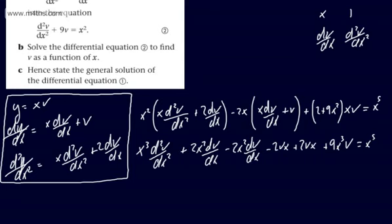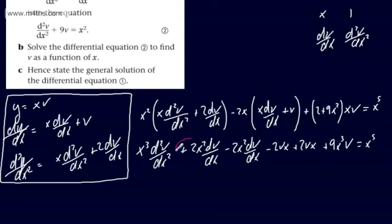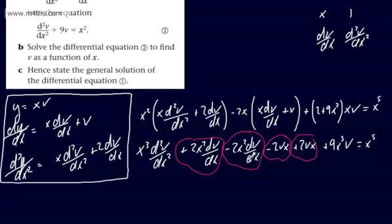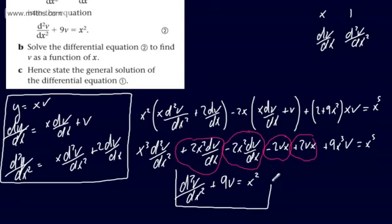At this point we can see some terms cancelling. The +2x² dv/dx and −2x² dv/dx cancel, and the −2xv and +2xv cancel. We're left with x³ d²v/dx² + 9x³v = x⁵. Dividing through by x³ gives d²v/dx² + 9v = x², which is exactly the form required. That's my preferred method — substitute, expand, and simplify.